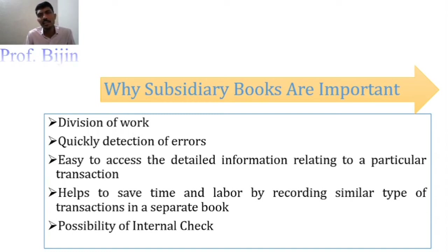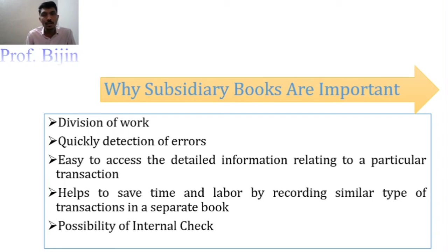Finally, we have the possibility of internal check, which is related to auditing. For example, if a clerk has done some work, the same work is reviewed by another employee — that is internal check. If one person maintains all sales-related transactions, another person can easily review that particular book. In a general journal this is difficult because multiple employees may record different transactions, making it hard to identify who recorded what. But with subsidiary books, division of work is clear, so internal check is possible.